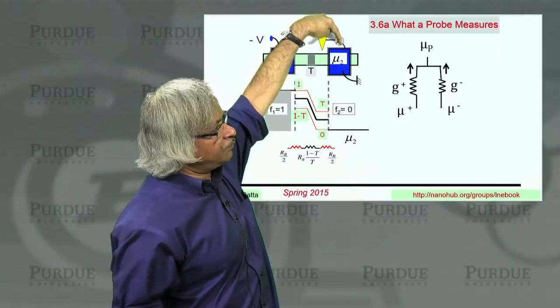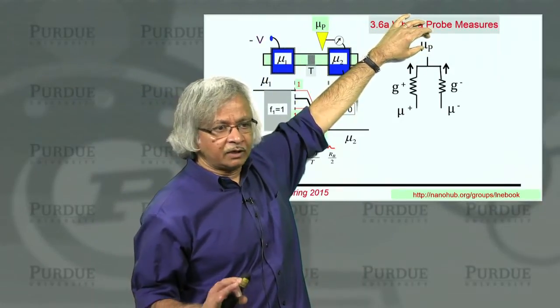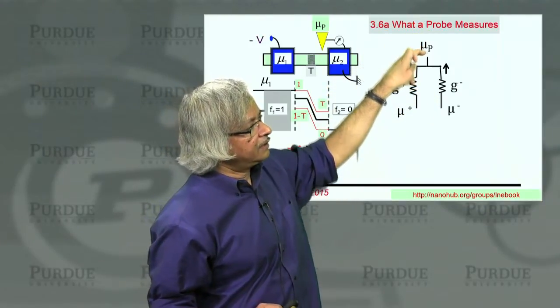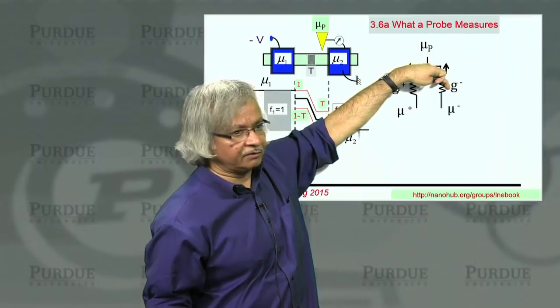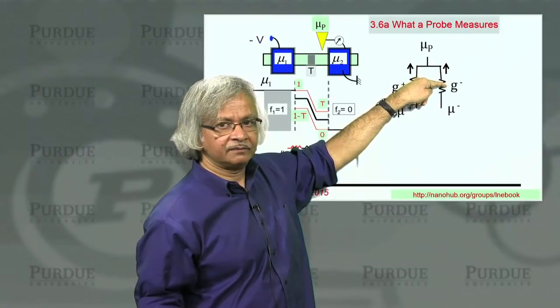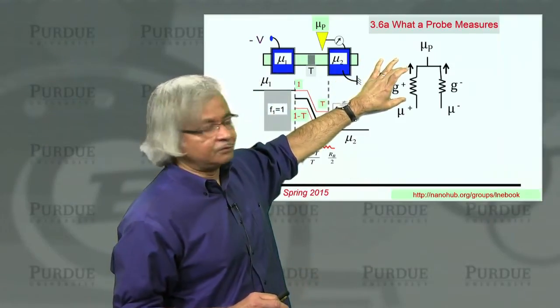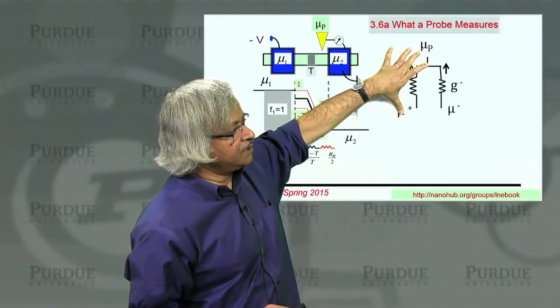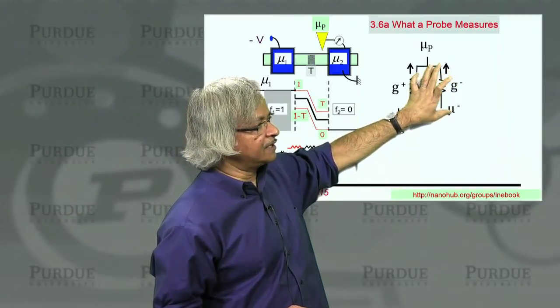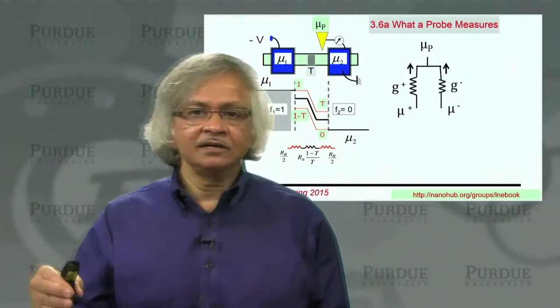So how would we determine the probe potential? The answer is that this is a voltmeter. It doesn't draw any current. So no current flows out of here. So what that means is, what Kirchhoff's law requires is that whatever current flows here must be the exact negative of that. So if you have one microamp coming out this way, you must have one microamp going back this way. So what you can do is write this Kirchhoff's law for the current in this arm, which would be mu plus minus mu p times this conductance. And you could write the current in that arm, which would be mu minus minus mu p times that conductance. And then say that the sum of the two must be zero.